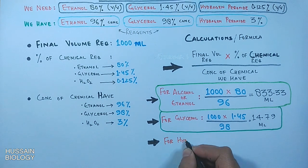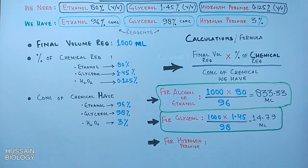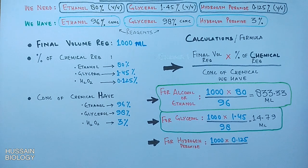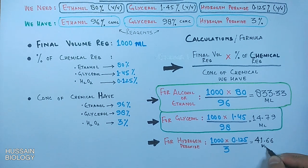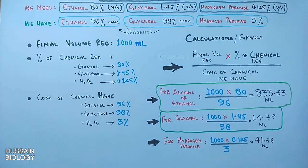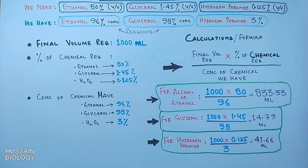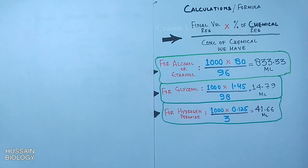For hydrogen peroxide, the formula is: 1000 × 0.125 (percentage of hydrogen peroxide required) ÷ 3 (percentage concentration of hydrogen peroxide available). From this equation we get 41.66 ml — that is the amount of hydrogen peroxide required for the final solution of 1000 ml.